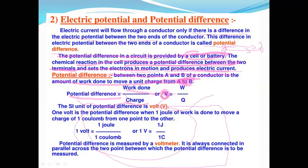The symbol of potential difference is V. The symbol of work done is W and charge is Q, so V = W/Q. The SI unit of potential difference is Volt. One Volt of potential difference equals one Joule per one Coulomb.